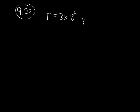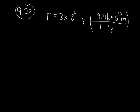Since light years aren't a unit we usually work with, we'll convert this into SI units, where one light year is equal to 9.46 times 10 to the 15 meters. That's a conversion factor you would be given if you needed it. When you do this, your light years cancel, and you find that the radius is 2.84 times 10 to the 20 meters.